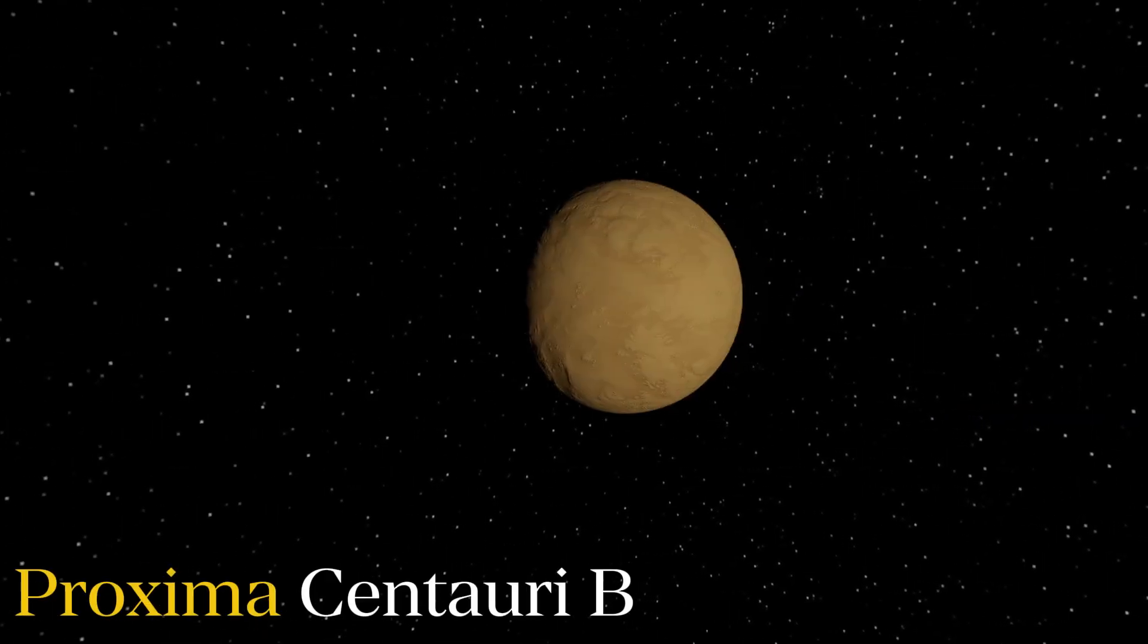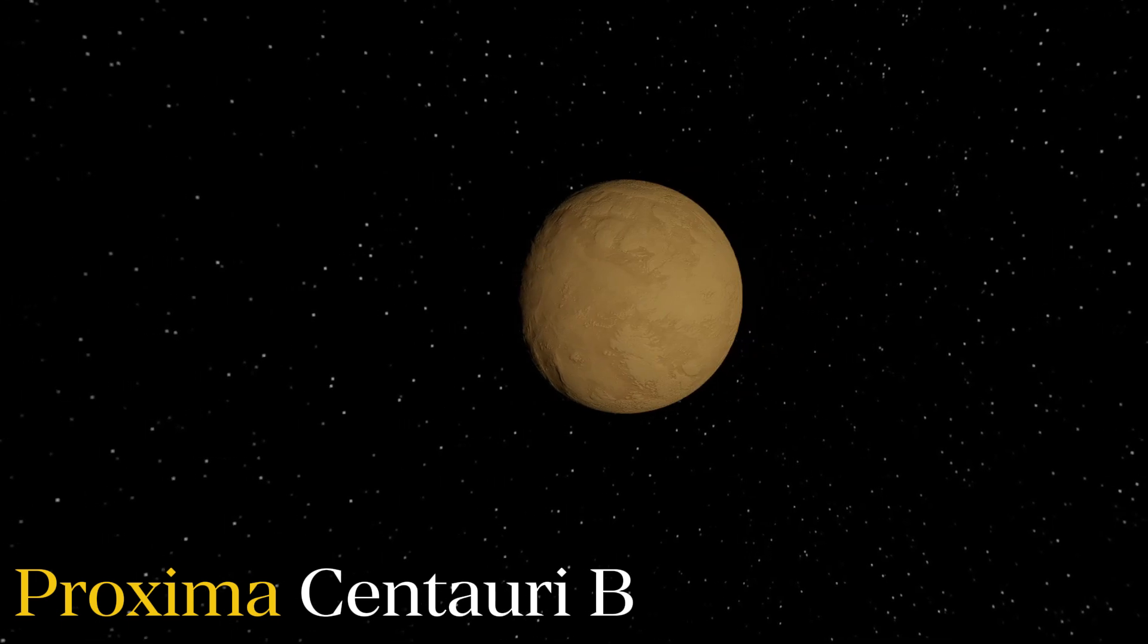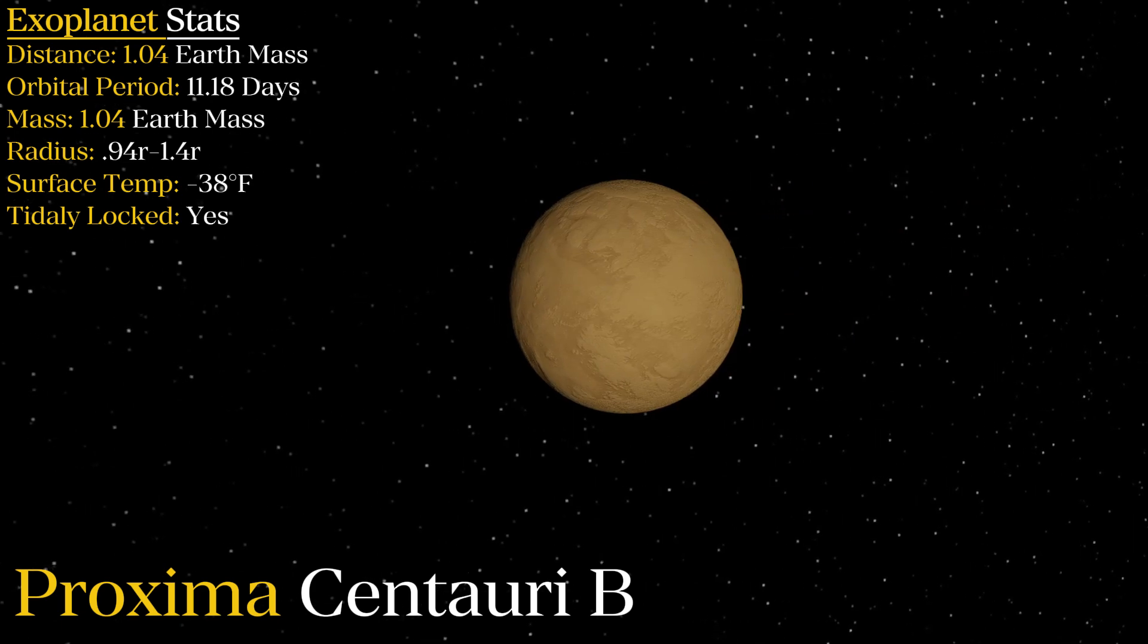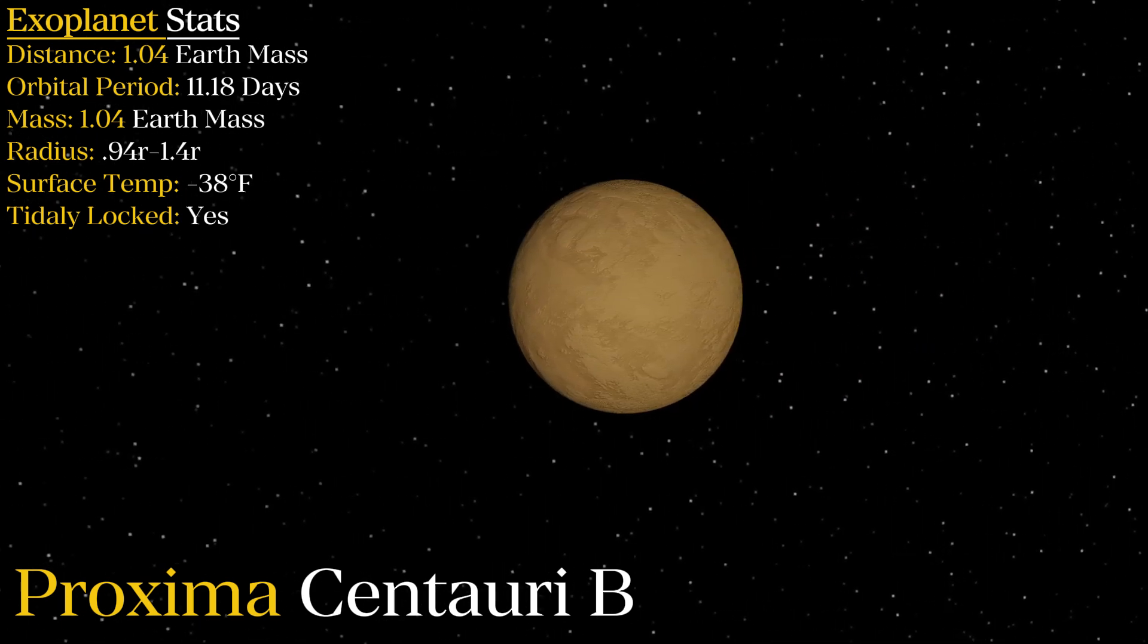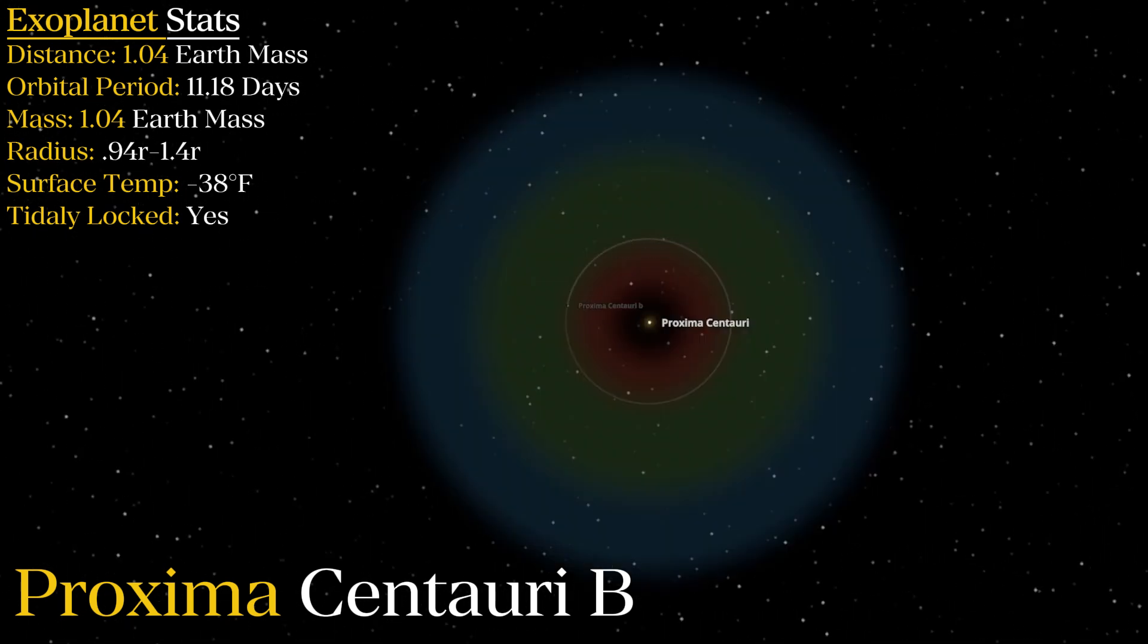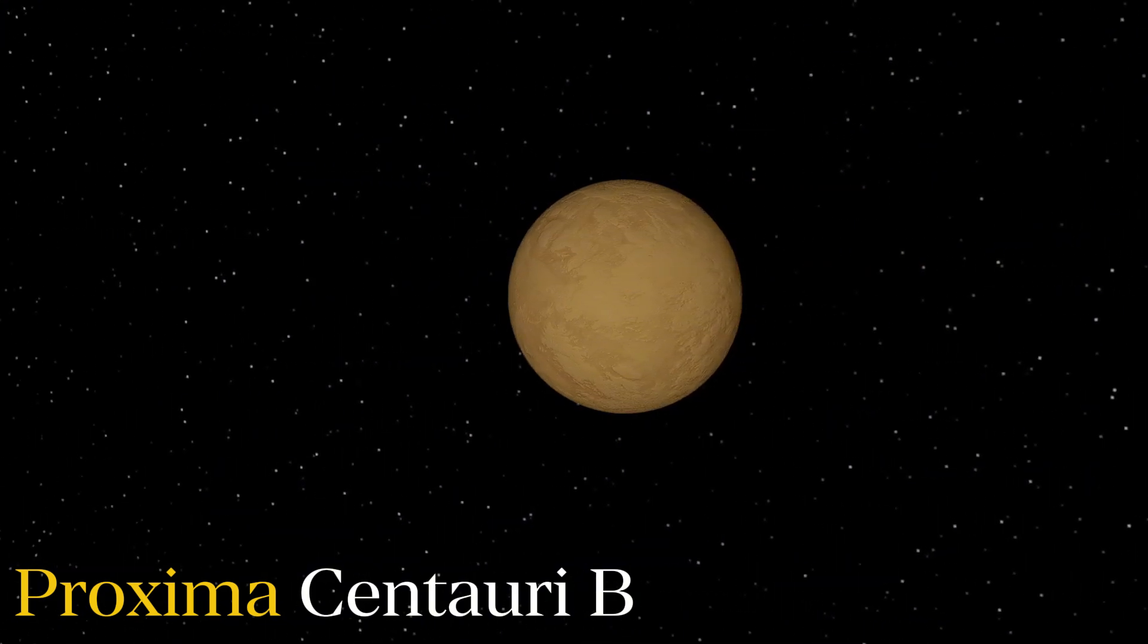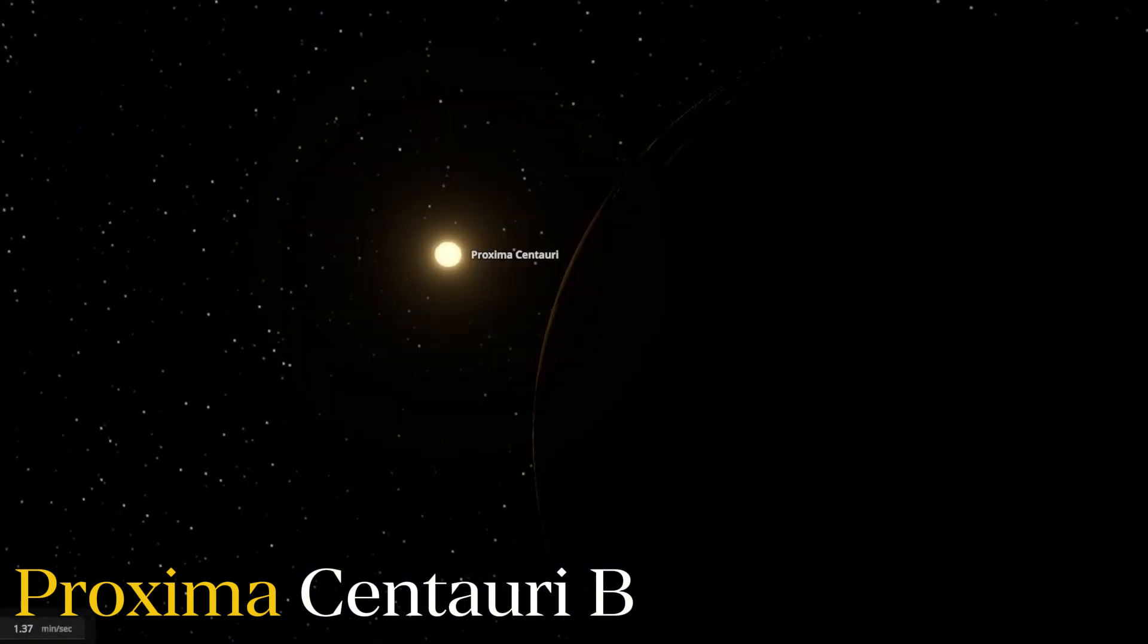Proxima Centauri b. It's the most commonly known exoplanet for sure and the reasons for this are not because of its potential habitability, but more because of its location. Only 4.24 light years away from Earth. While it does orbit within the habitable zone of its parent star, Proxima Centauri b is most certainly tidally locked. And this is a huge problem because liquid water would boil away on the day side and freeze on the night side.